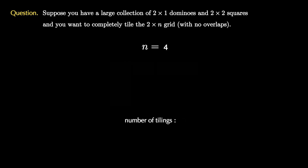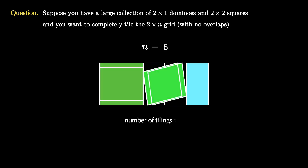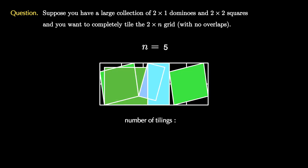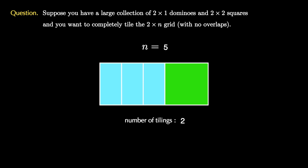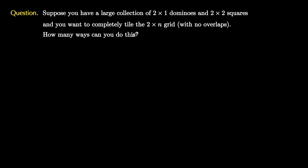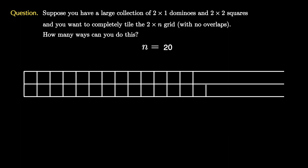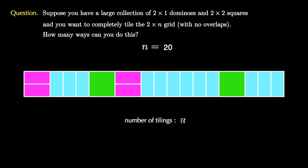Let's go through one more example and gather one more piece of data, this time figuring out how many tilings there are on the 2 by 5 board. Can we use the data that we've gathered to figure out how many ways you can do this no matter what n is? For example, here's one such tiling on the 2 by 20 board — can we figure out how many total tilings there are on this 2 by 20 board?